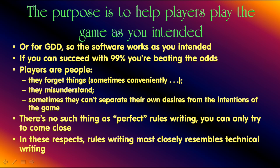Because players are people. They forget things, sometimes conveniently. They misunderstand. Sometimes they can't separate their own desires from the intentions of the game. So there's no such thing as perfect rules writing — you can only try to come close. In these respects, rules writing most closely resembles technical writing: rules or directions about how to do things.